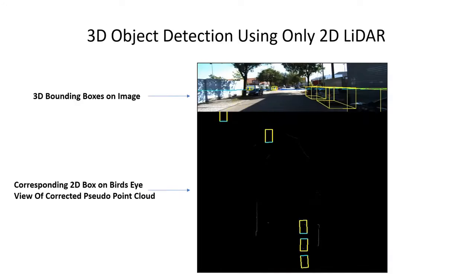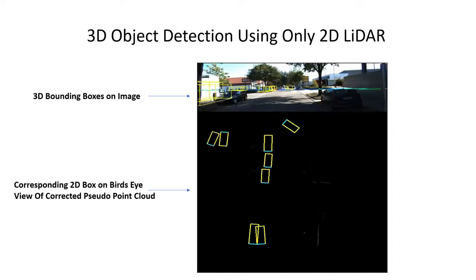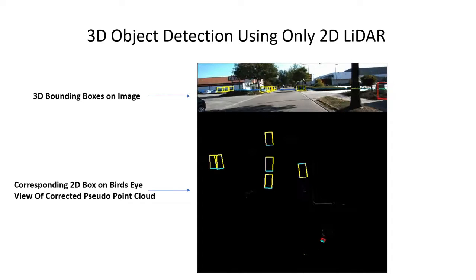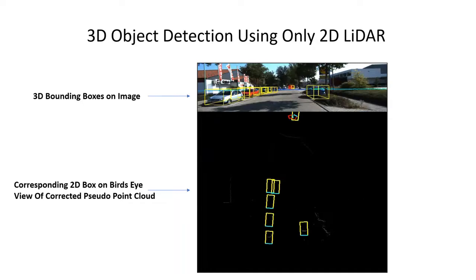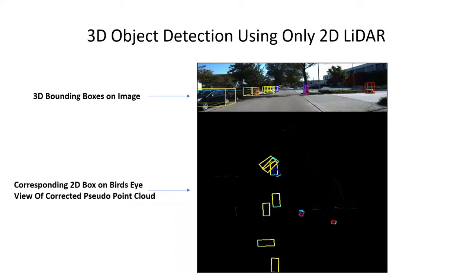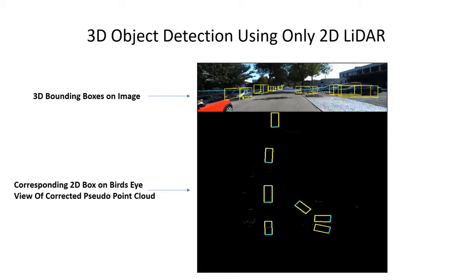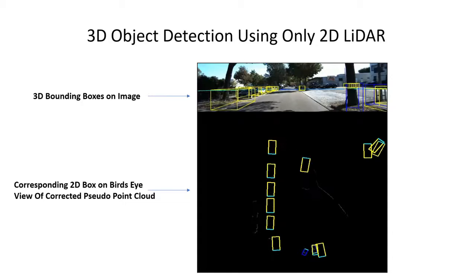Here is a demo of our system using the 2D LIDAR. The image and single-beam LIDAR data acquired from the hardware module is provided to the 3D object detection network. We observe that the 2D LIDAR performs fairly, but detection accuracy is not very high.